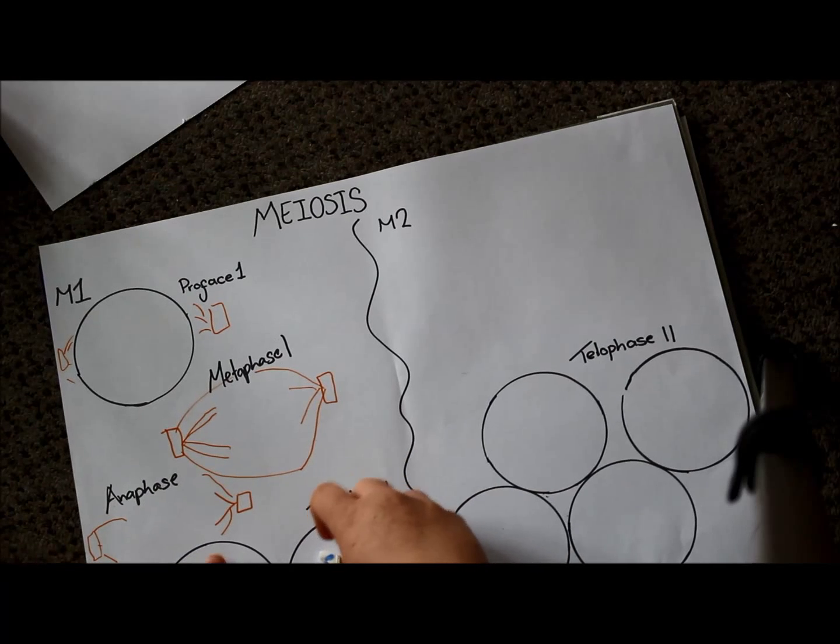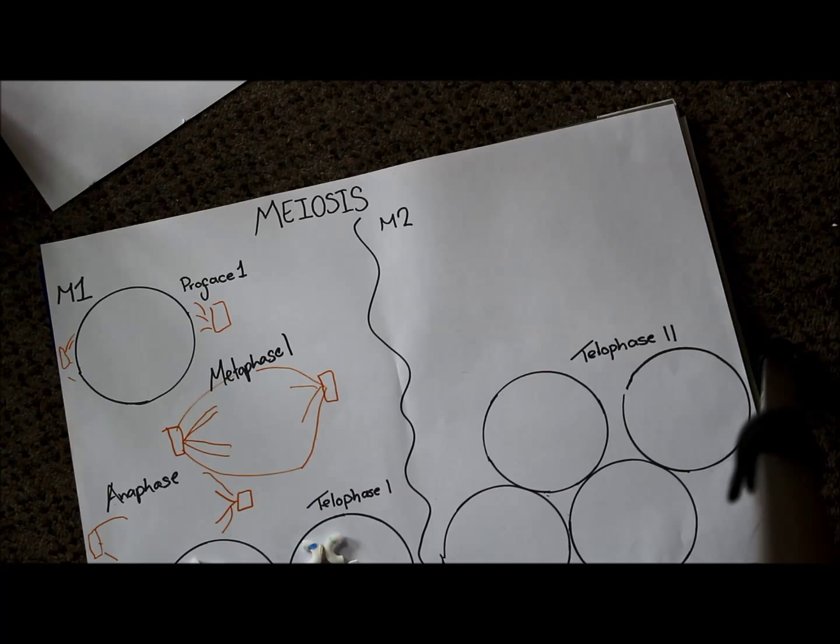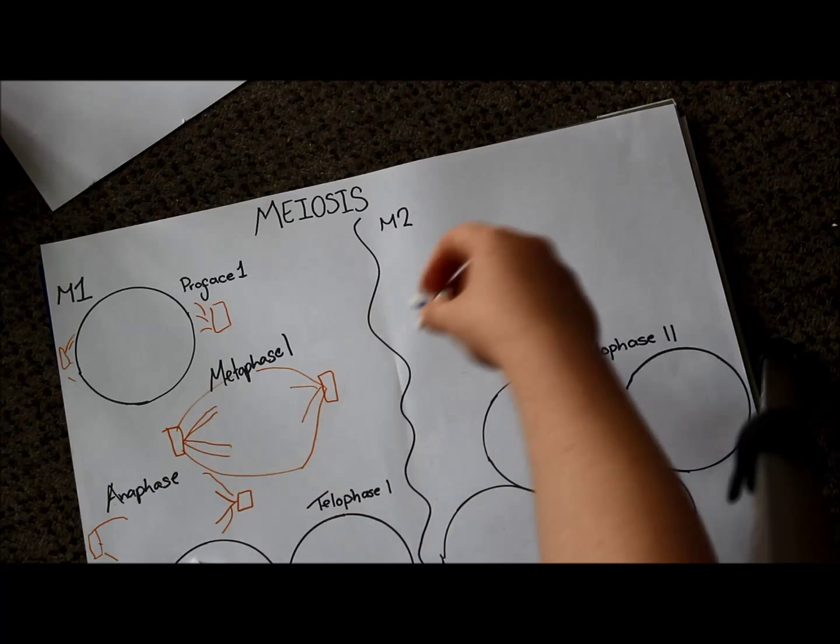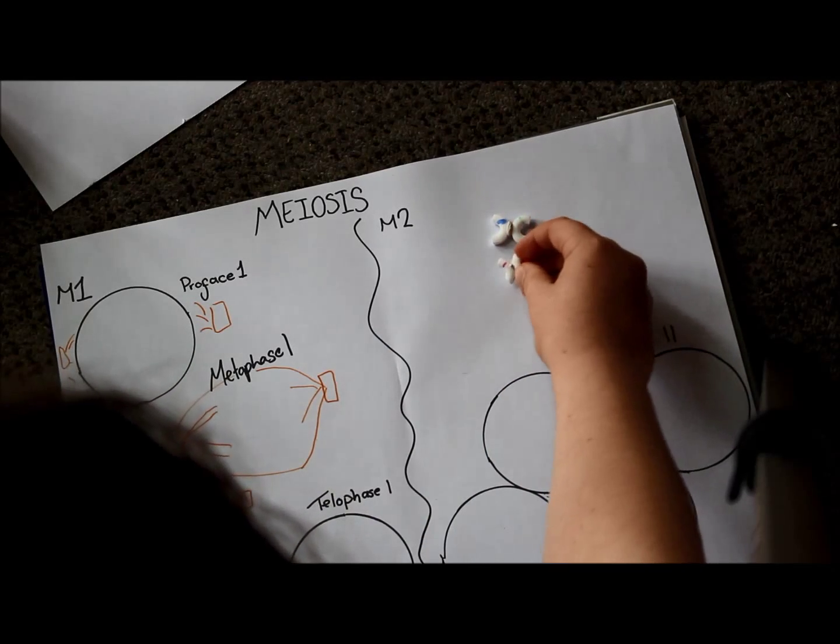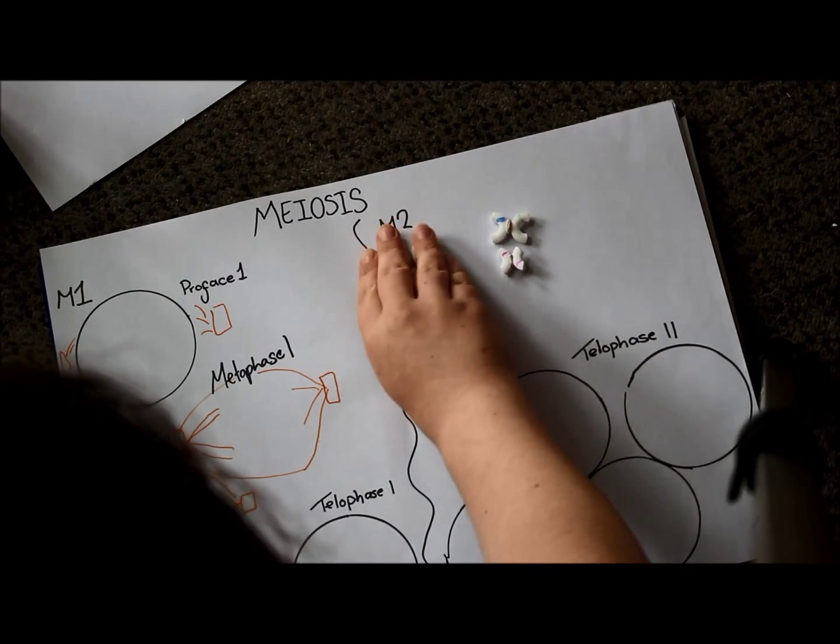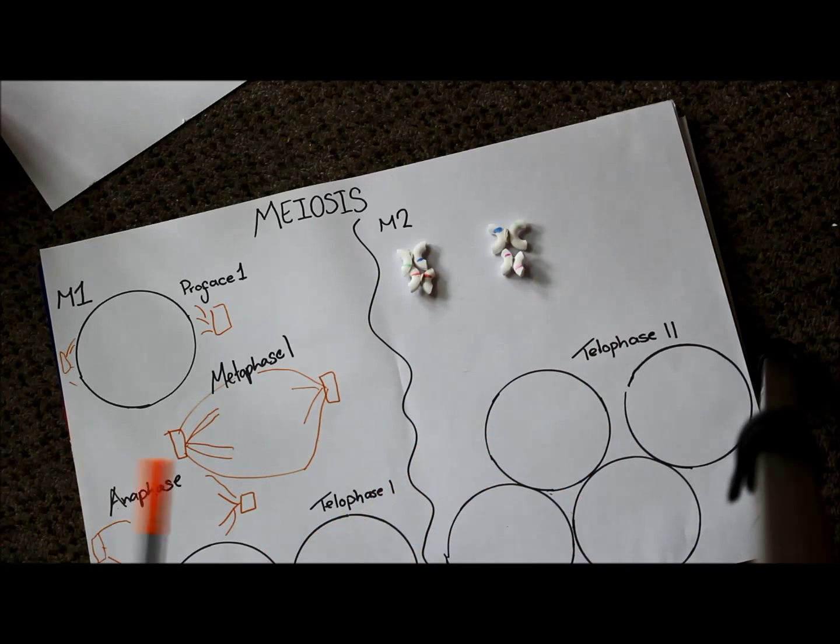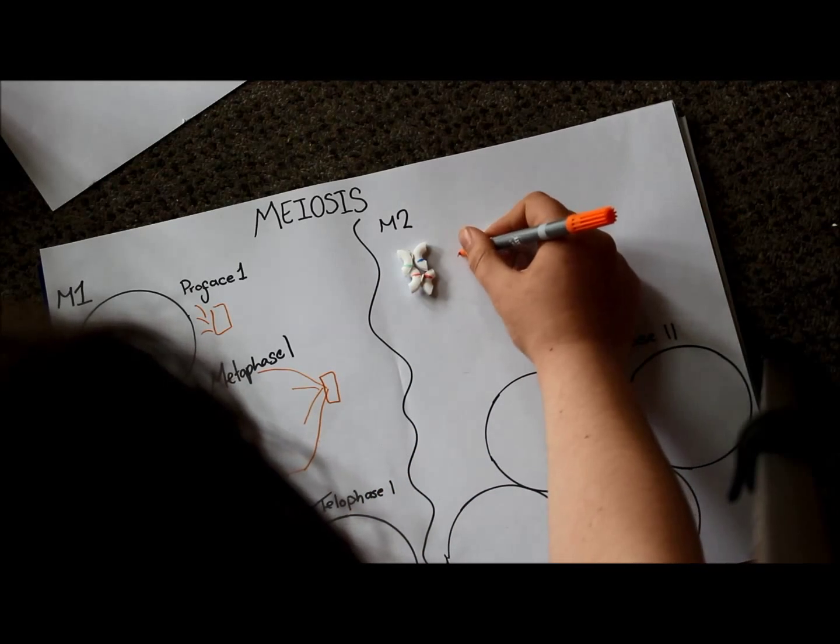Telophase is exactly the same. The nuclear membrane reforms around our pairs of chromosomes and the cytoplasm splits. But then, we move straight into metaphase two. So in each cell, these chromosomes line up, which is what you'll remember from mitosis.